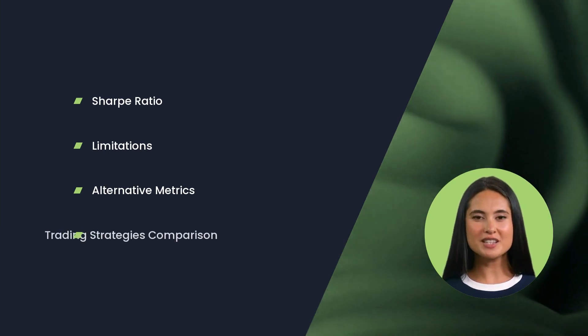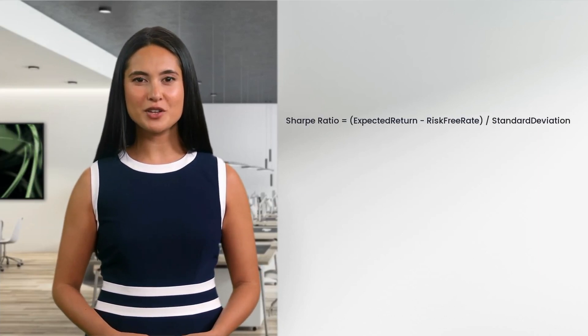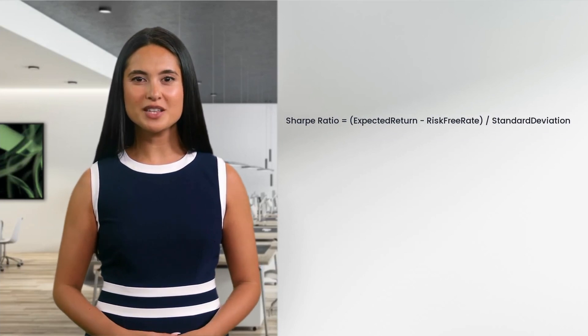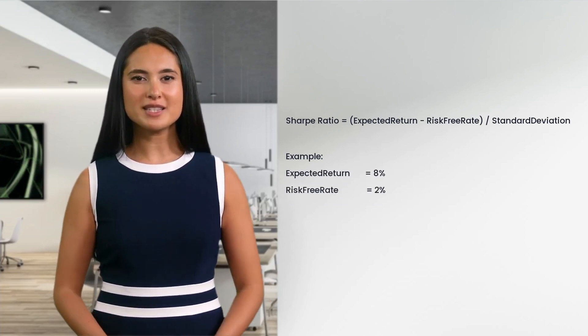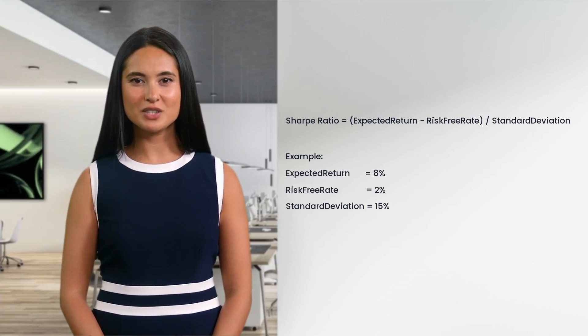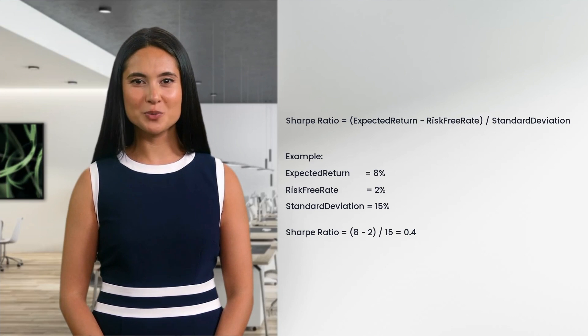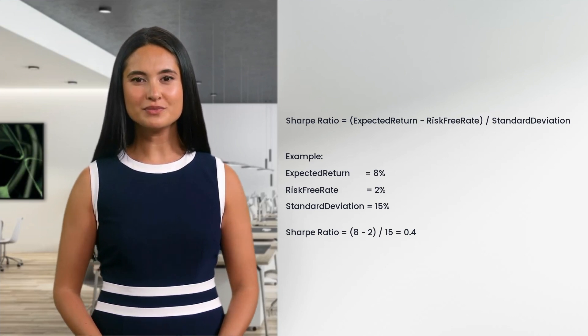Finally we'll compare two hypothetical trading strategies using all these metrics. So what is the Sharpe ratio? Named after Nobel laureate William Forsyth Sharpe, it measures the performance of an investment compared to a risk-free asset after adjusting for its risk. The Sharpe ratio seeks to characterize how well the return of an asset compensates the investor for the risk taken. Here's the formula: Sharpe ratio equals expected return minus risk-free rate, divided by standard deviation. For example, a strategy with an expected return of 8%, a risk-free rate of 2%, and a standard deviation of 15 gives a Sharpe ratio of approximately 0.4.